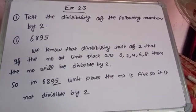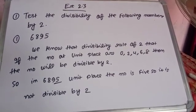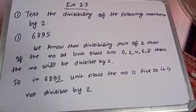So we can see that in 6895 at unit place we have 5. So the number will be not divisible by 2.